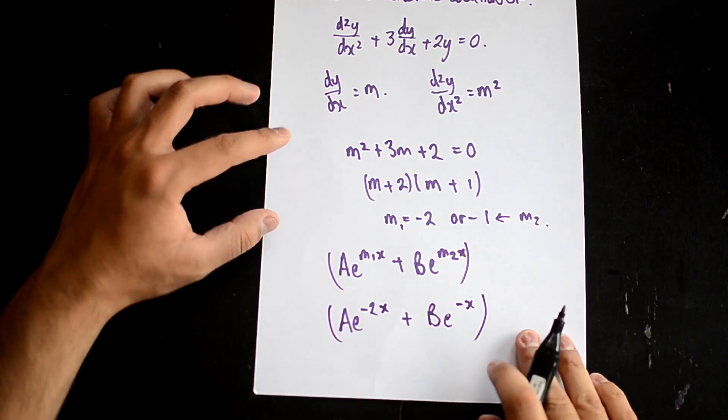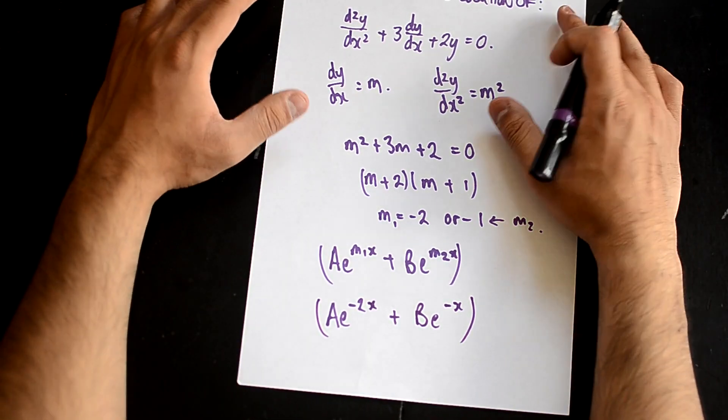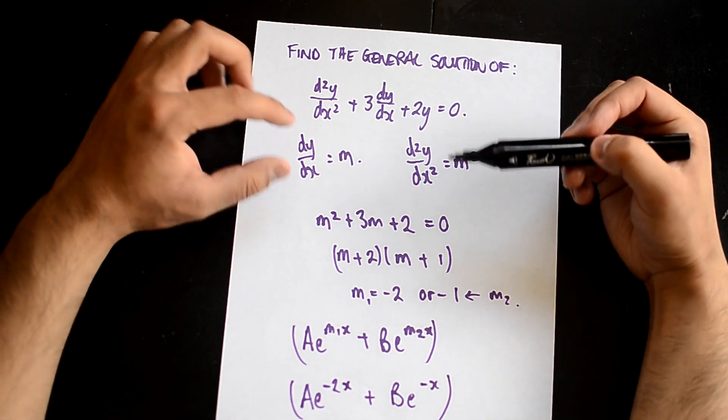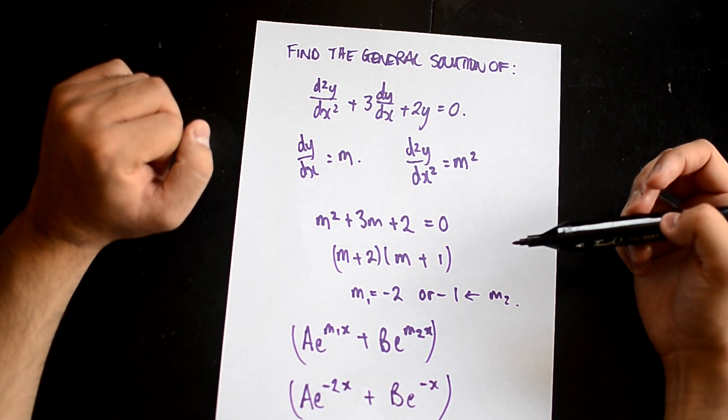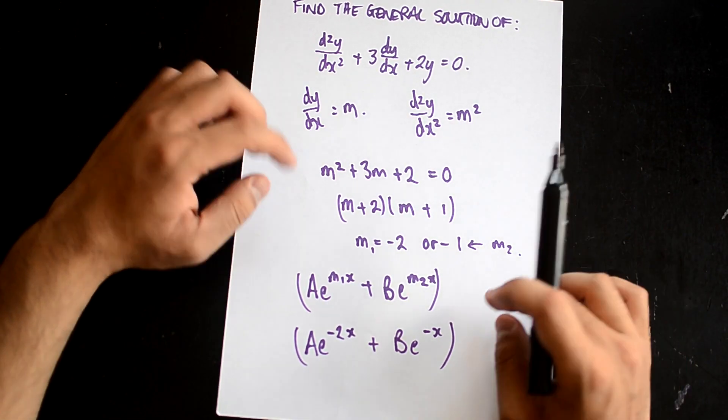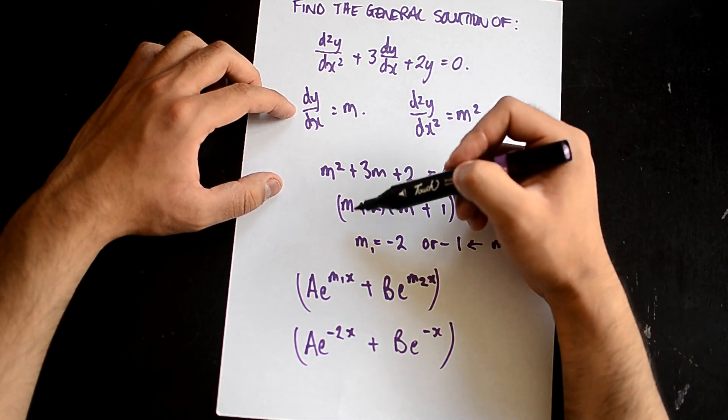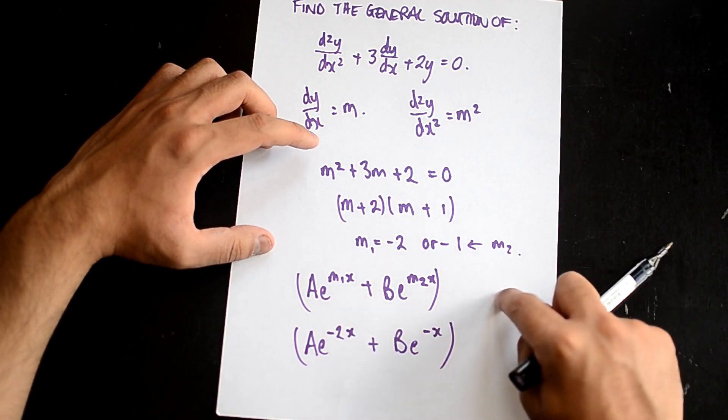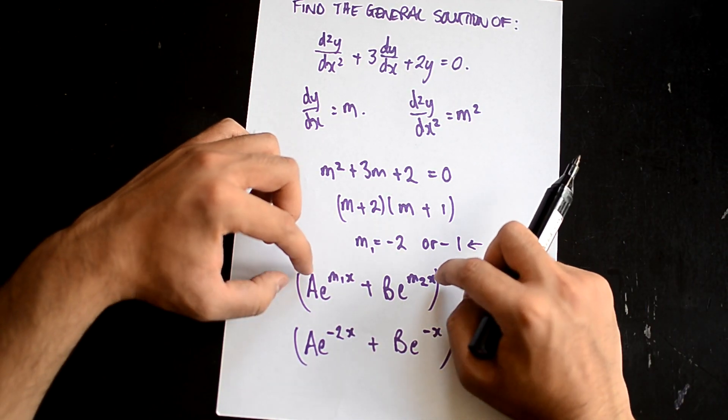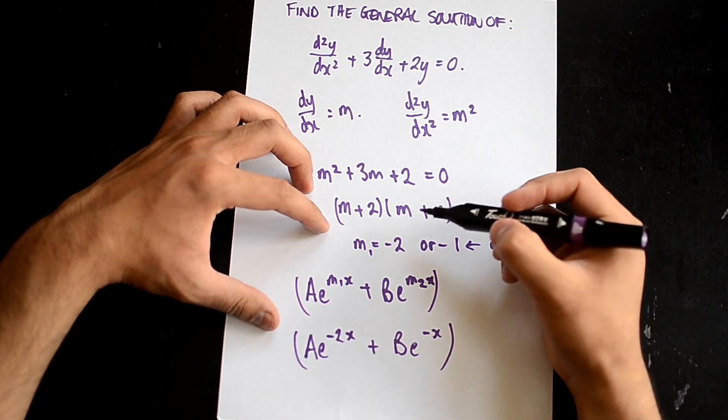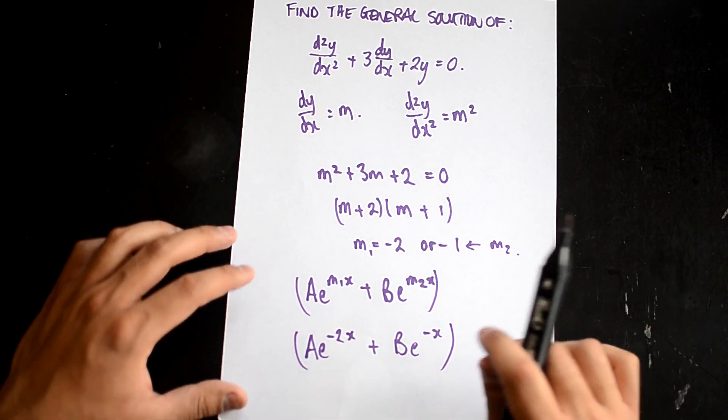As you can see, this is now the general solution to this problem. Quite straightforward: substitution and solving a quadratic equation. This is something you should know and remember. If you ever get it into this form, this formula should be sticking in your head. Then you just plug in the values, and that's your general solution.